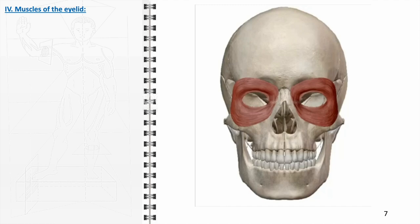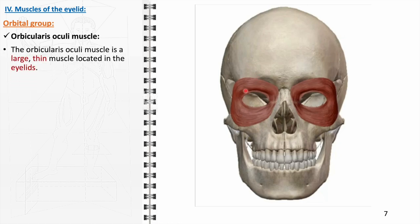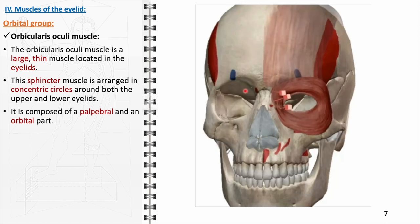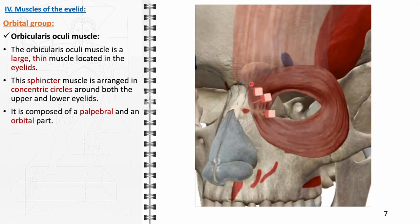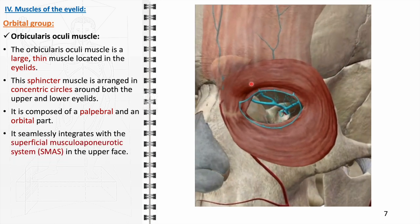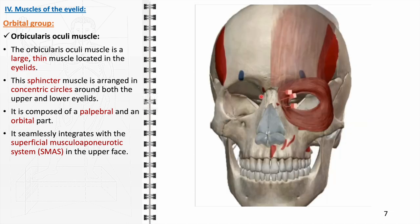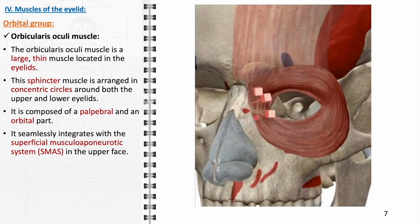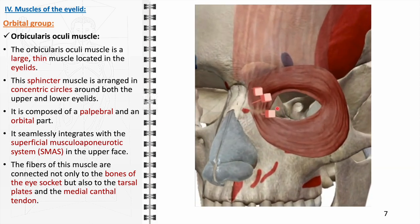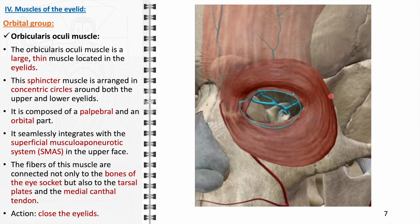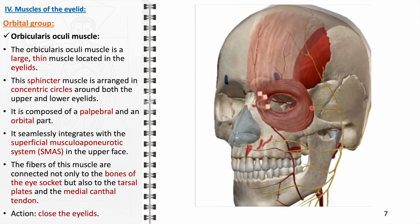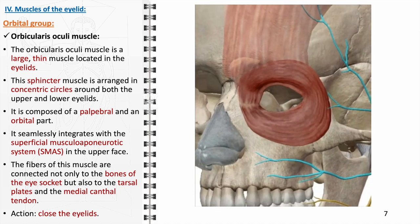The orbicularis oculi, a key element of the orbital group, is a large, thin muscle located in the eyelids, functioning as a sphincter arranged in concentric circles around both the upper and lower eyelids. It is composed of two distinct parts: the palpebral and the orbital. It integrates with the superficial musculo-aponeurotic system in the upper face, with fibers connecting to the bones of the eye socket, the tarsal plates, and the medial canthal tendon. Its primary action is to close the eyelids. It is innervated by the zygomatic and temporal branches of the facial nerve and receives blood supply from the maxillary, superficial temporal, and facial arteries.